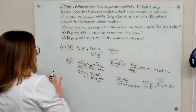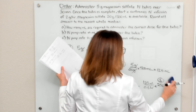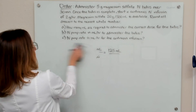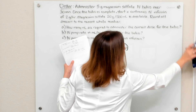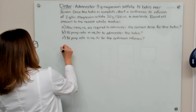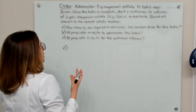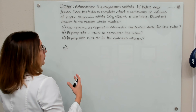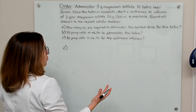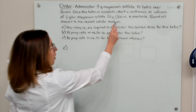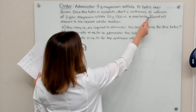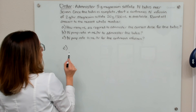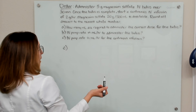All right, let's erase our work here to work through part C. Part C is asking us what is the IV pump rate in milliliters per hour for the continuous infusion. Per our order, our continuous IV infusion rate should be two grams per hour, but we want to get that in milliliters per hour.